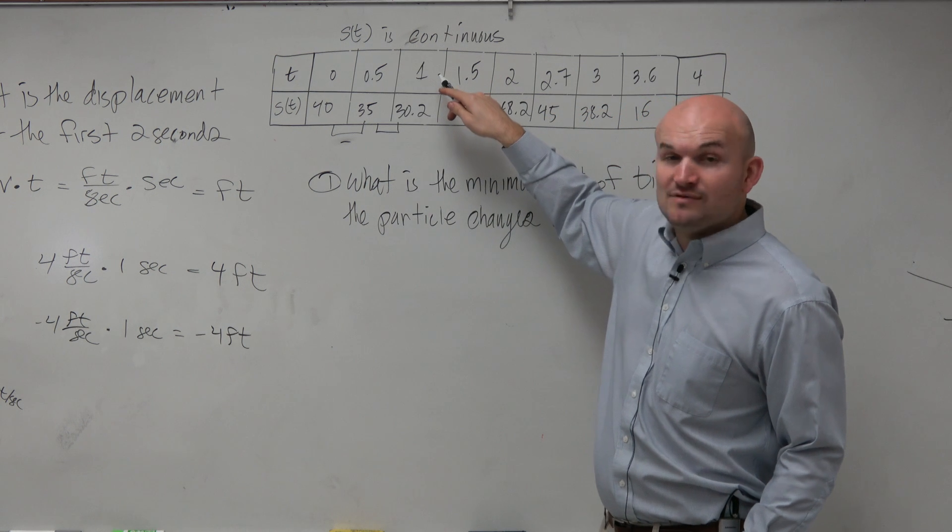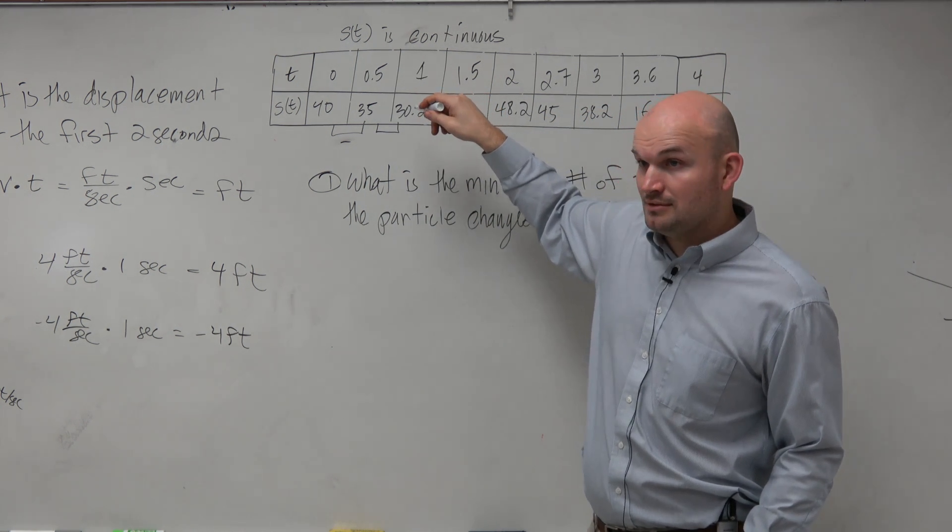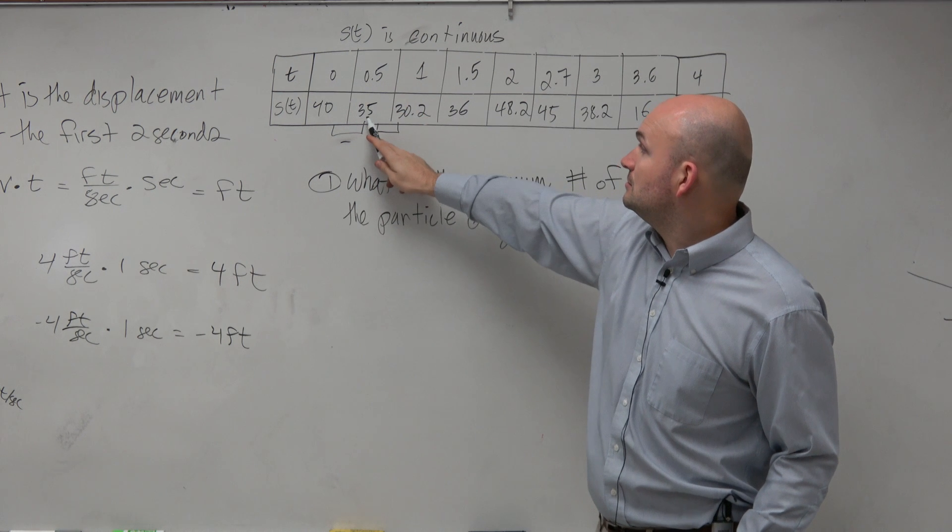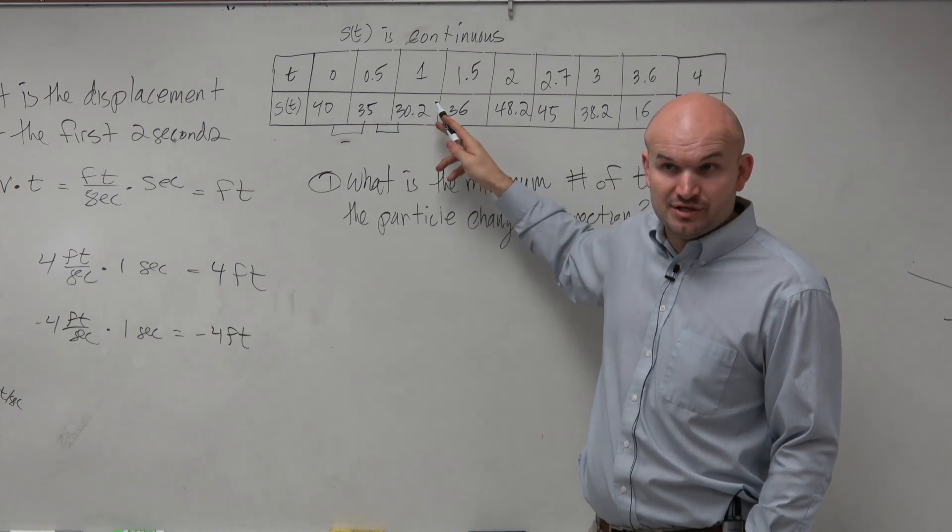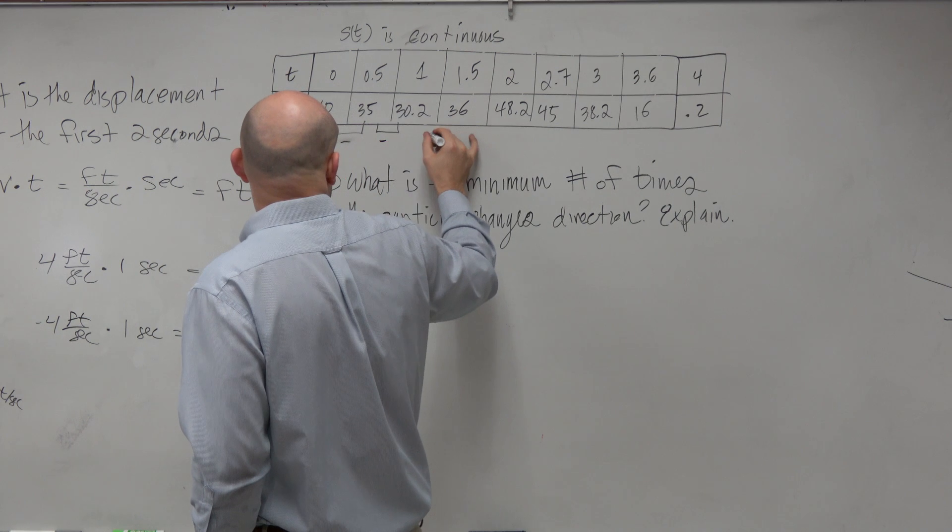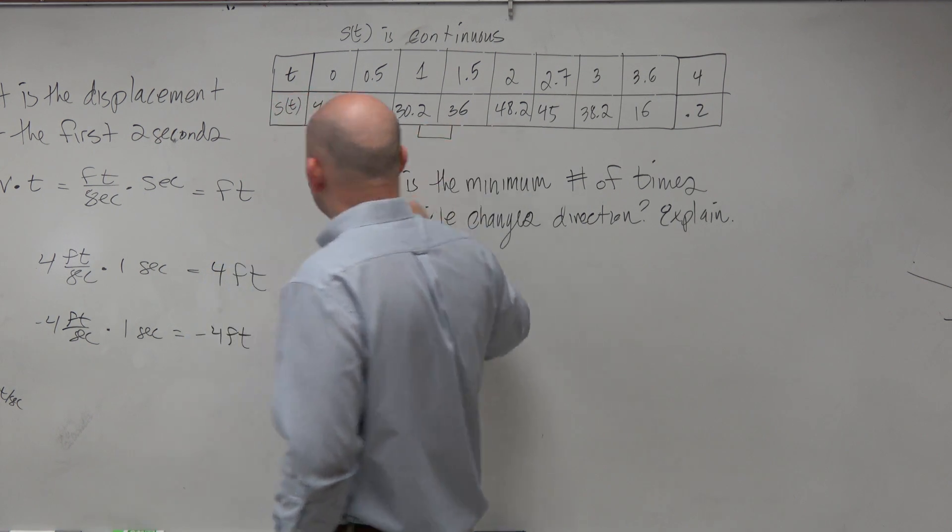From 0.5 to 1, is the particle increasing or decreasing? Going from 35 to 30.2, it's decreasing. From 1 to 1.5, what's happening?